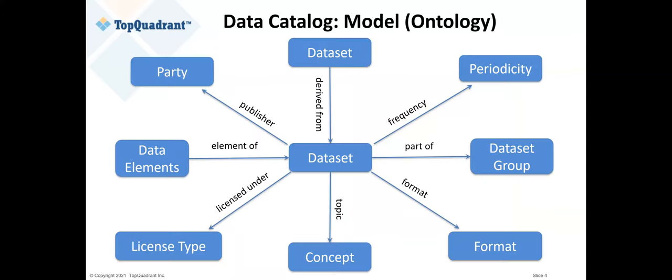The connections are the most important. How do those connections happen? This is where we start getting into the idea of a data or metadata model. The model describes the relationships between the data assets and the secondary components. Here we see an example describing a data set — this is the model, showing what is allowed to be said about a data set inside your data catalog.